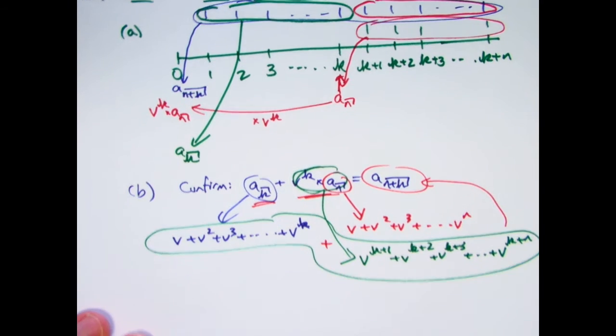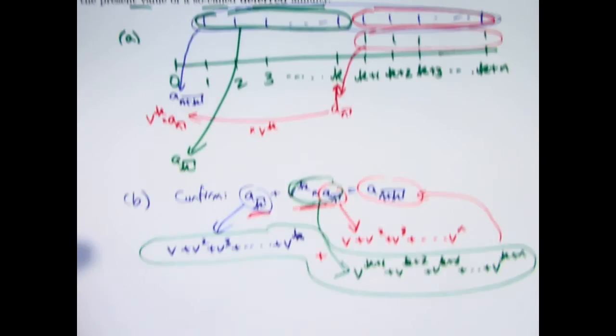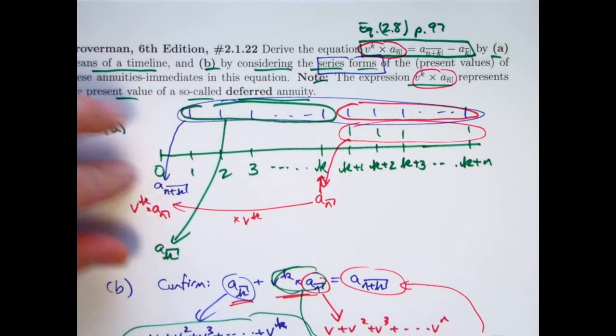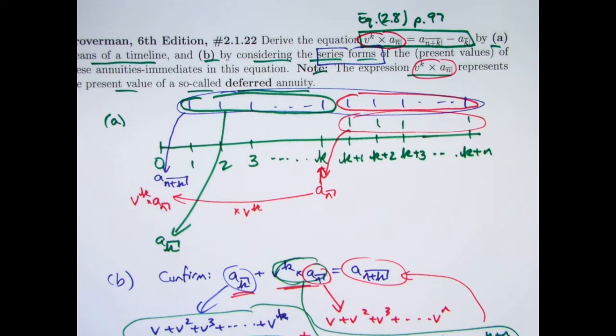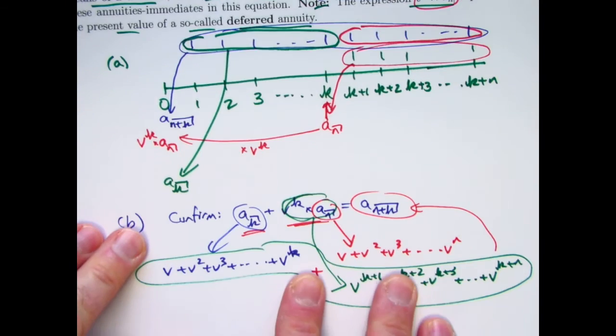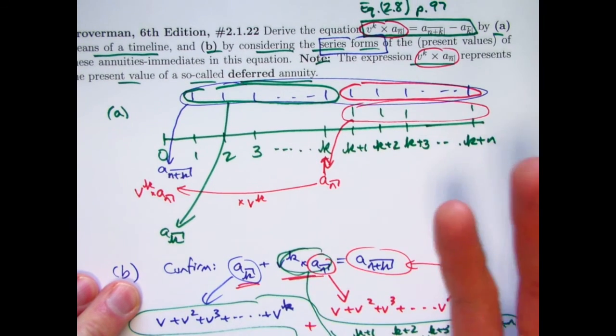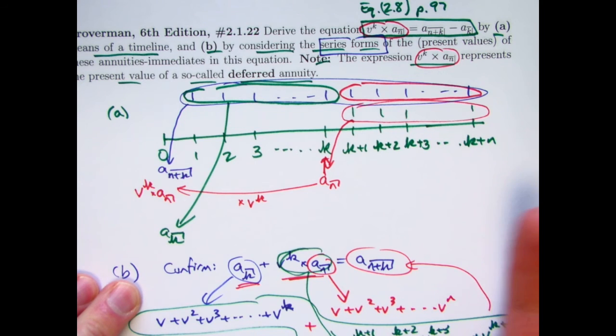So that's a bit more of what you might call a proof of this equality. But the timeline approach, while it's not a proof, is the kind of intuition you want to develop to get good at solving lots of problems in financial math, where maybe you don't want to bother thinking about the series. You want to try to come up with an equation that will help you solve a problem in the quickest way possible. And oftentimes the timeline approach is the best thing to use.